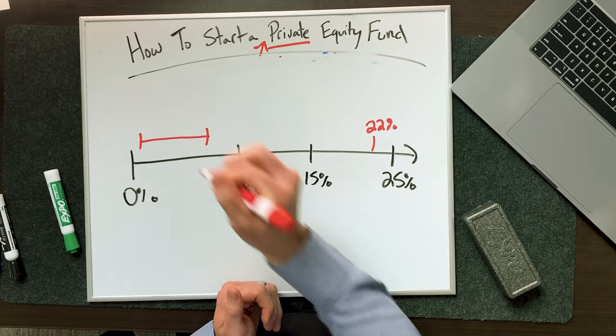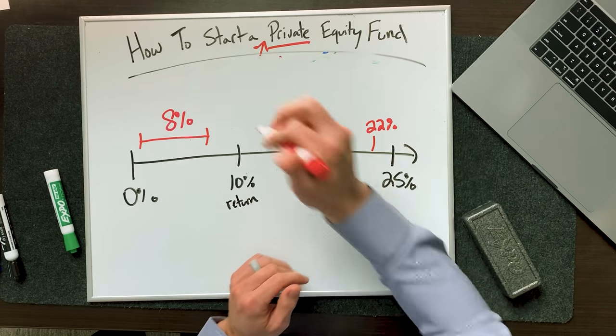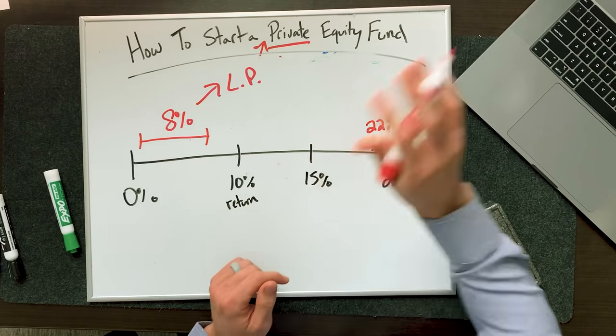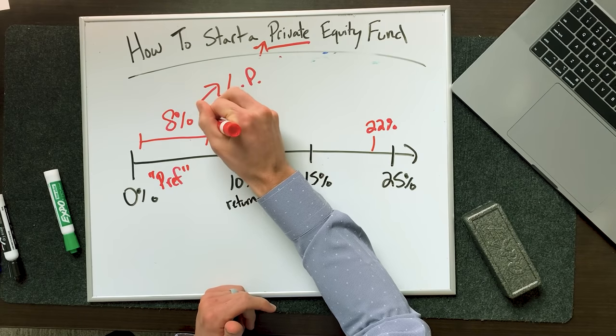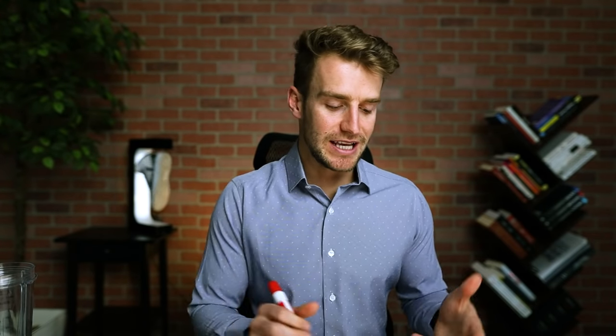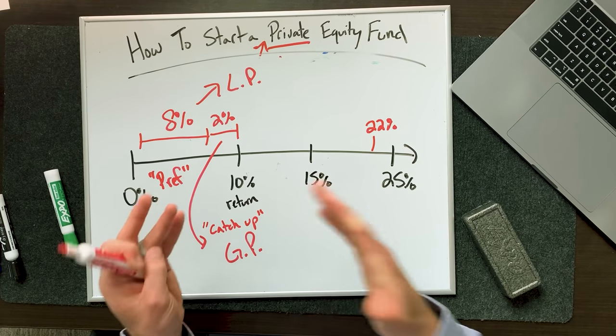A lot of funds upfront will do something called a pref — a preferential rate of return. In my fund, we have an 8% pref, meaning the first 8% of all returns goes to my limited partners, right to my investors. So for example, if this year we only got a 7% return, my investors would take all 7% because they get what's called a pref — a preferential rate of return for risking their money in the fund. After the pref, in my fund we do a 2% catch-up, so the next 2% of all dollars come to the general partner if we hit that certain benchmark.